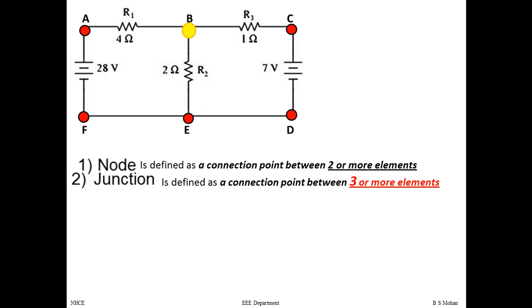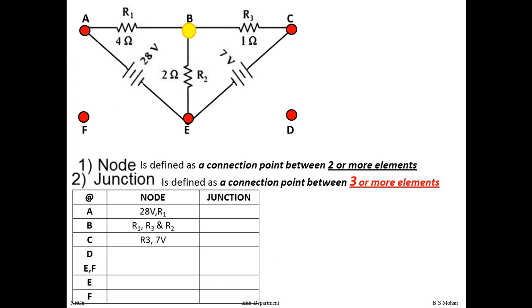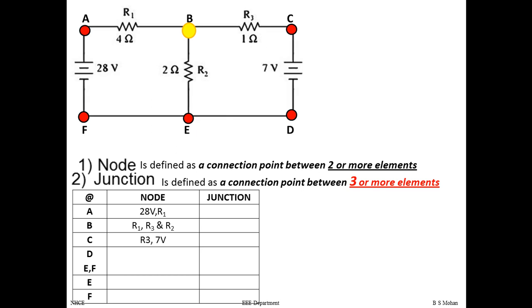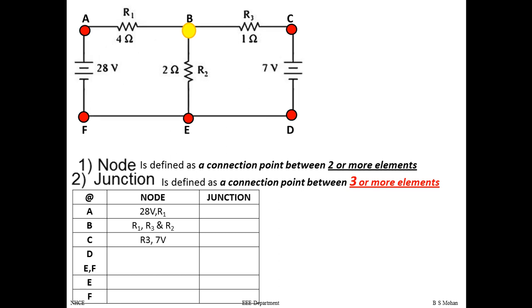Point B is one of the junctions. At point A we have two elements: 28V and R1, so it's only a node. At point B we have three elements: R1, R3, and R2, so it's a junction. At point C we have R3 and 7V, so it's a node. Now, these two circuit diagrams are electrically the same — but what difference do you observe between them?